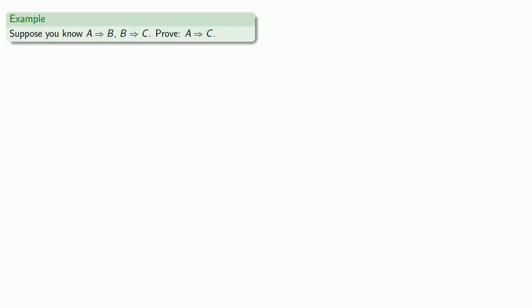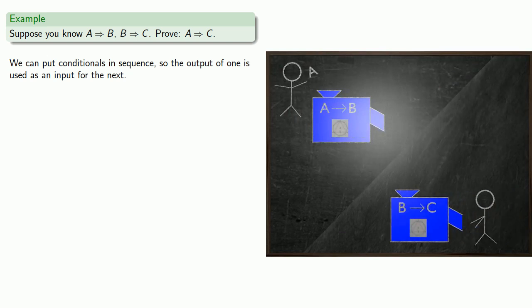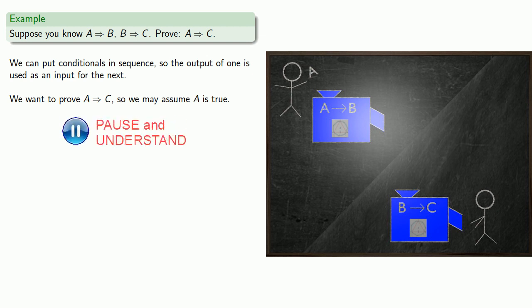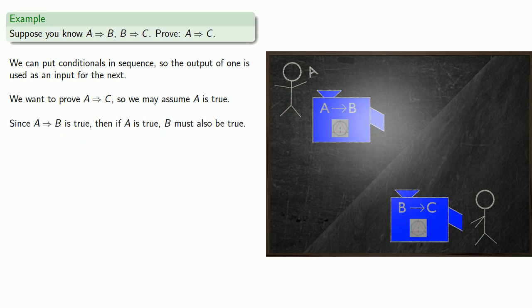For example, suppose we know: if A then B, and also if B then C — let's prove if A then C. We can put the conditionals in a sequence so the output of one is used as the input for the next. We want to prove if A then C, so we may assume A is true. Since if A then B is true, and A is true, B must also be true — in other words, if we supply our conditional with A, we get output B.